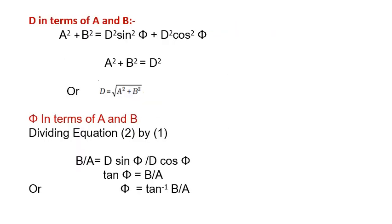D in terms of A and B: A squared plus B squared will be D squared sin squared phi plus D squared cos squared phi, which means A squared plus B squared will be D squared, or D equals square root of A squared plus B squared.